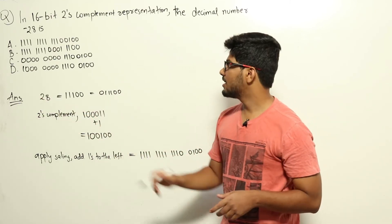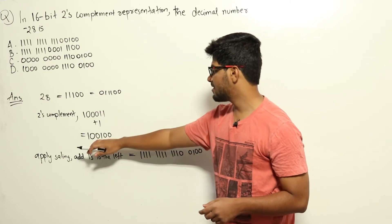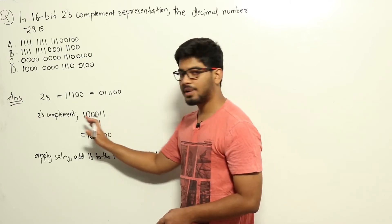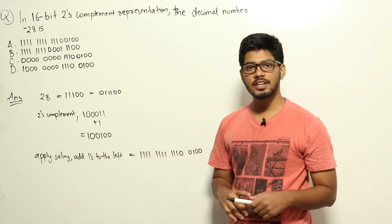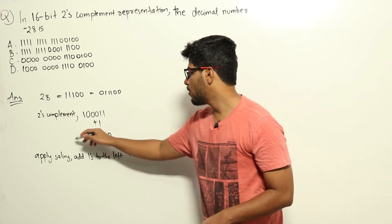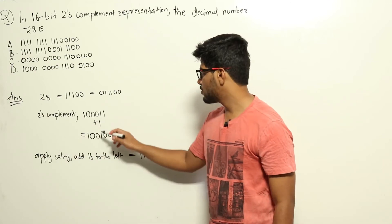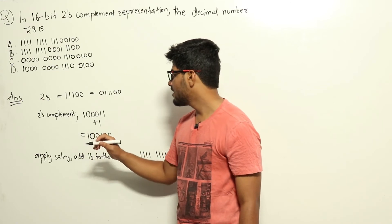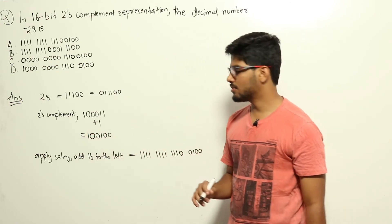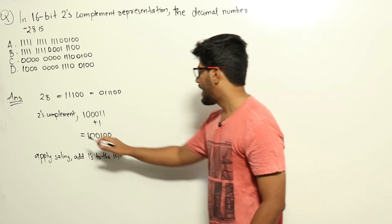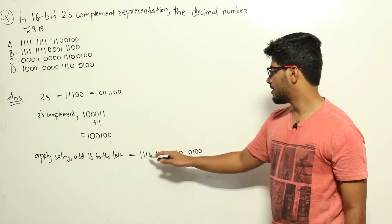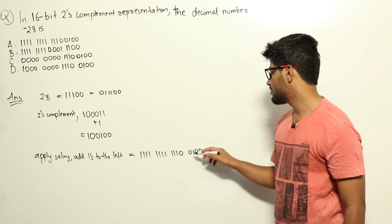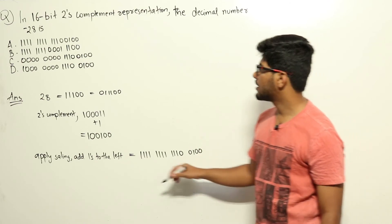In the question we need to represent it in 16 bits, but here we are representing it using 6 bits only. To apply sign extension, for a negative number we add all ones to the left side, and for a positive number we add all zeros to the left side, when changing from a lower number of bits to a higher number of bits. So adding all ones, we get eleven ones followed by the rest of the number: 1 0 0 1 0 0.